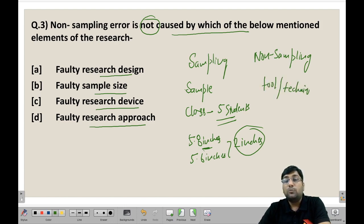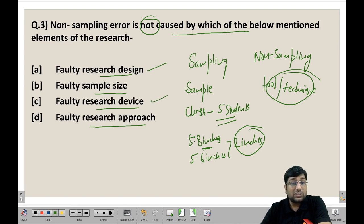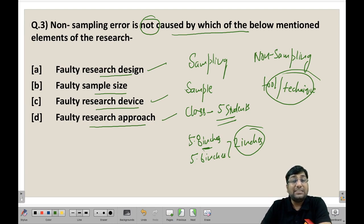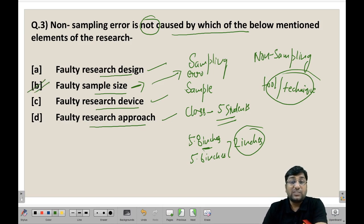So, non-sampling error can be caused by faulty research design, faulty research device, and faulty research approach. However, faulty sample size relates to sampling error — not non-sampling error. So the correct answer is (B) faulty sample size. Let's move to the next question.